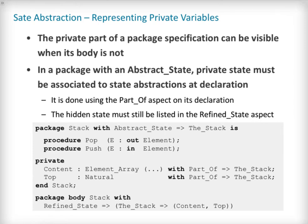State abstractions are always refined in the package's body where all the variables are visible. When only the package specification is available, we need a way to specify to which state abstraction private variables belong. This is done using the part_of aspect on the variable's declaration. Part_of annotations are mandatory — if a package has an abstract state annotation, then all the hidden state defined in its private part must be linked to a state abstraction. For example, if we choose to define content and top in stack's private part instead of its body, then we must add a part_of aspect to both their declarations, associating them with the state abstraction the_stack, even though it is the only state abstraction defined in stack. Note that they still need to be listed in the refined_state aspect in stack's package body.